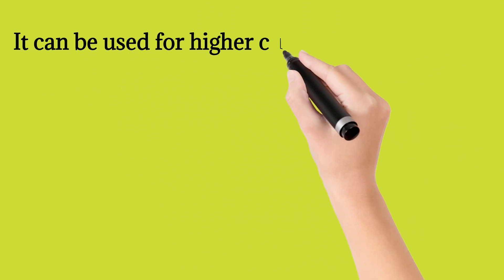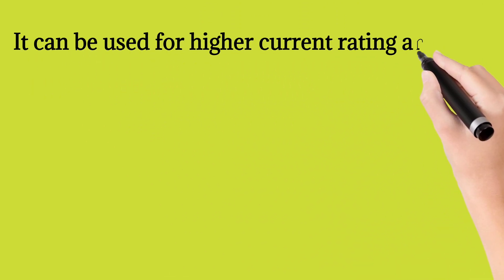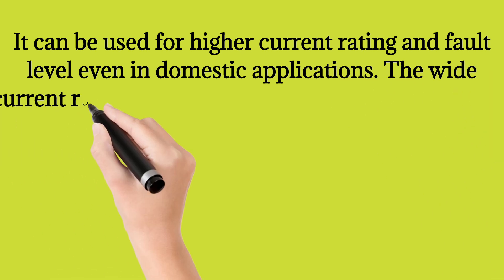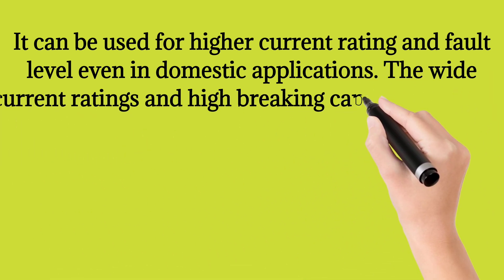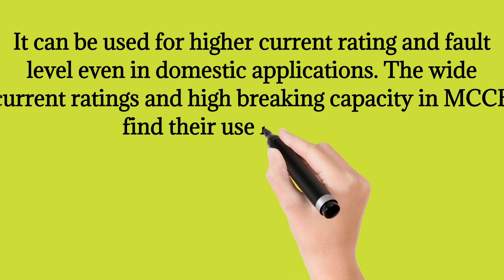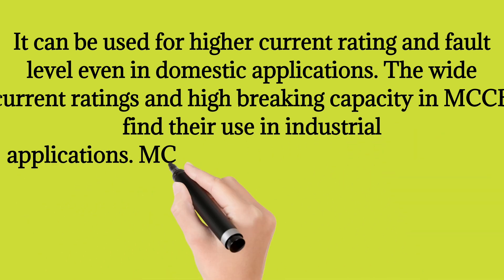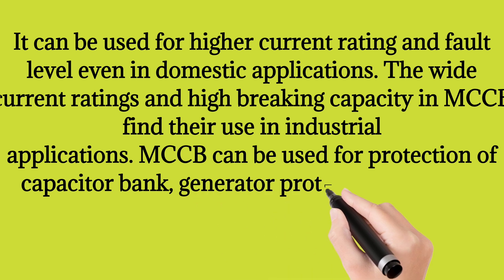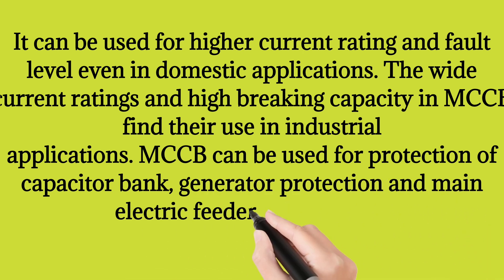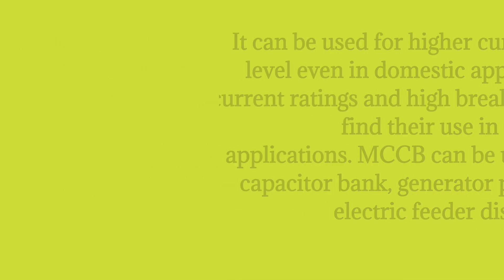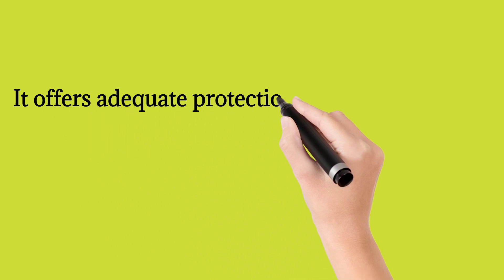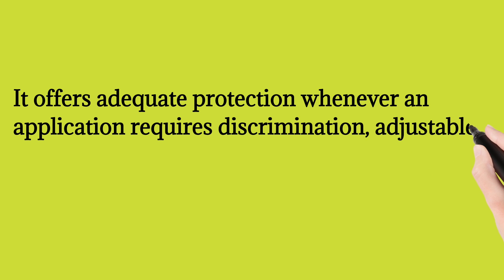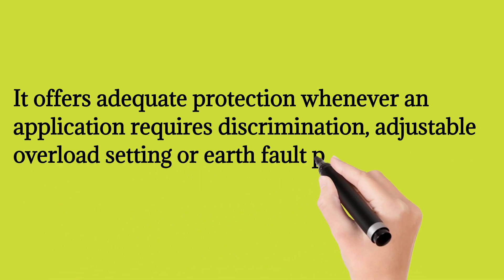MCCB can be used for higher current ratings and fault levels even in domestic applications. The wide current ratings and high breaking capacity in MCCB find their use in industrial applications. MCCB can be used for protection of capacitor banks, generator protection, and main electric feeder distribution. It offers adequate protection whenever an application requires discrimination, adjustable overload setting, or earth fault protection.